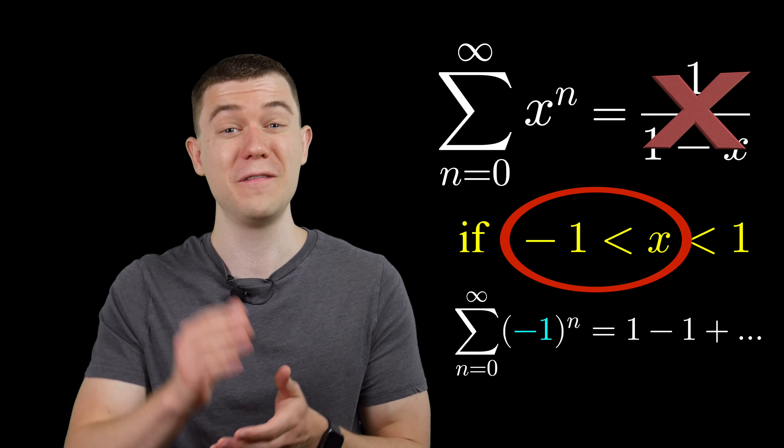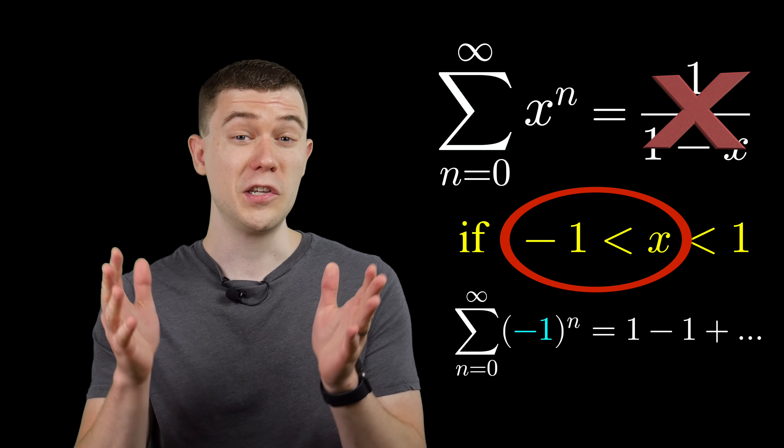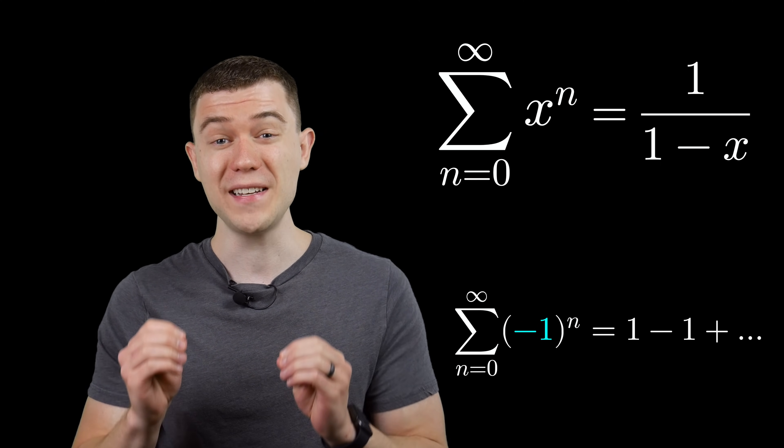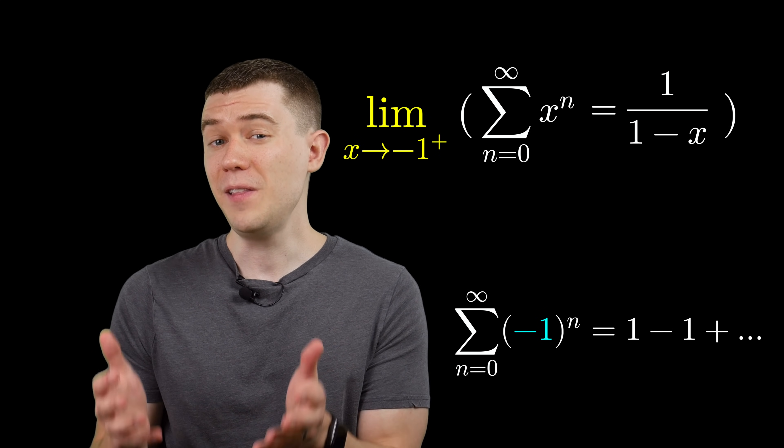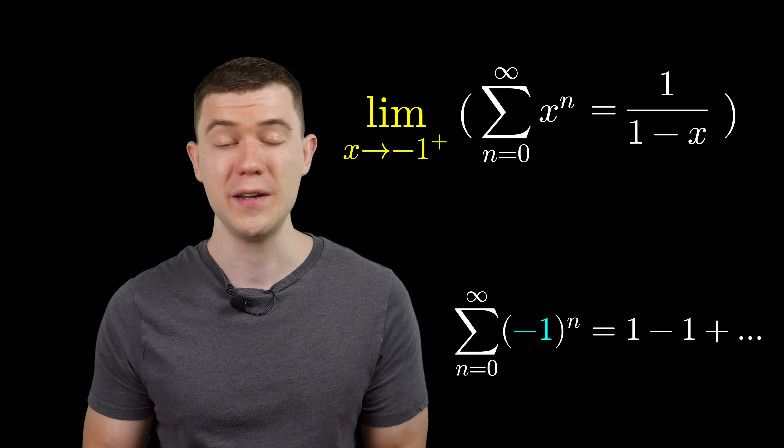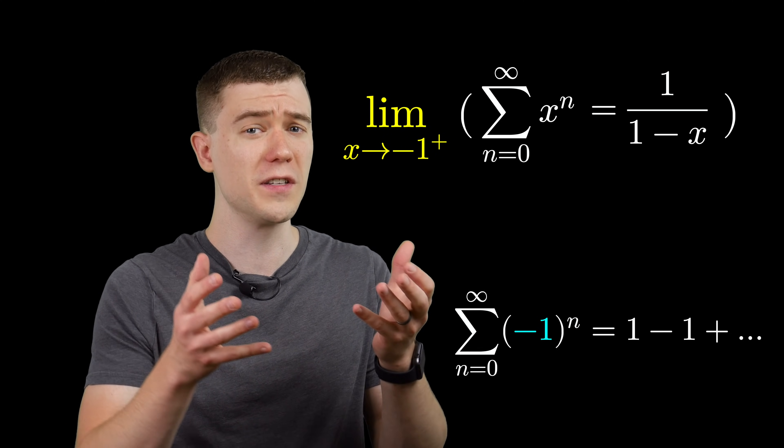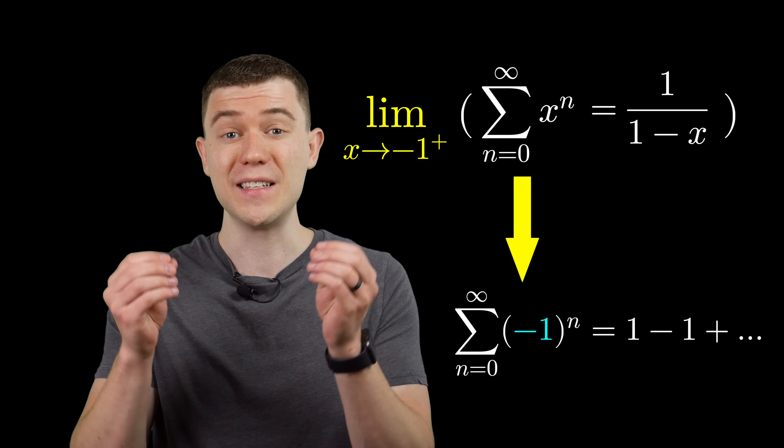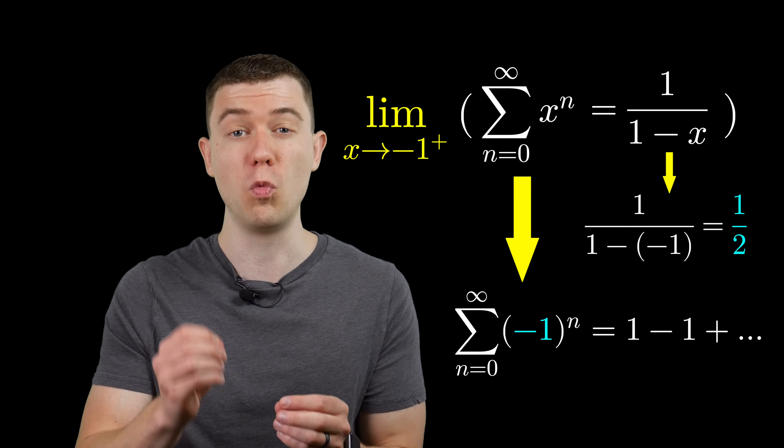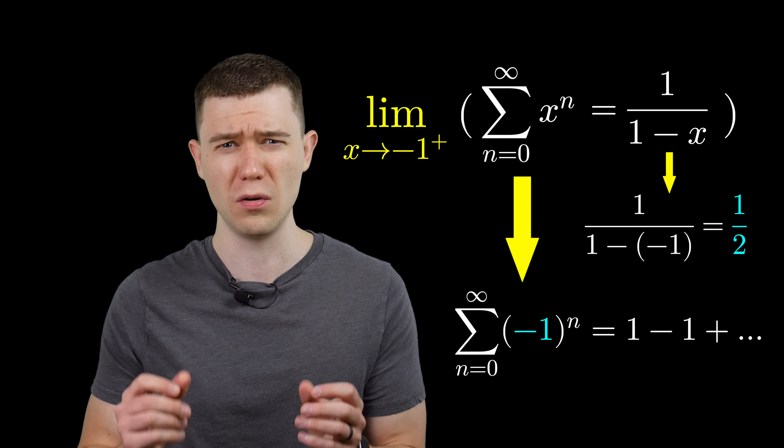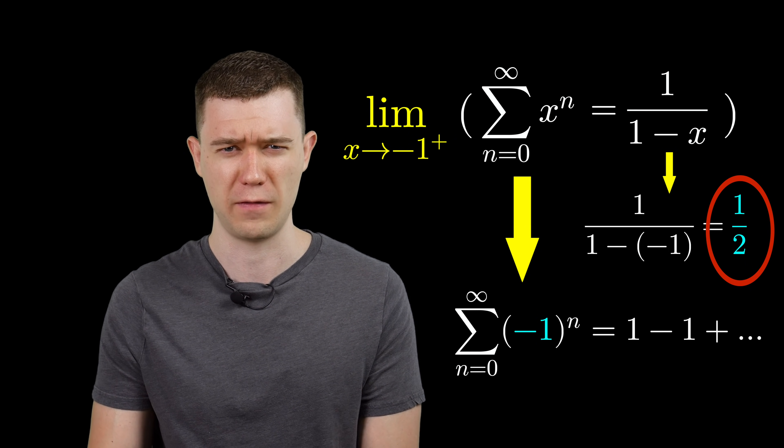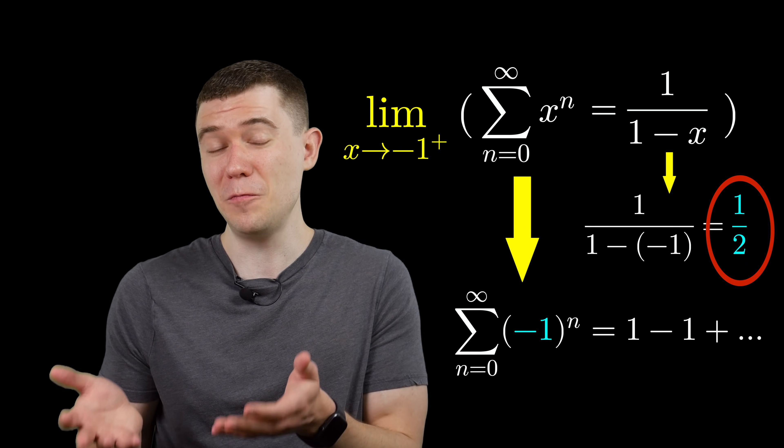Well, it's really right on the tip of the interval of convergence. So if we can't evaluate right at x equals negative one, what if we approached it? What if we did limits? If we let x approach negative one, then the geometric series approaches the Grandi series, and its sum approaches one over one minus minus one, or one half. That's pretty interesting, but we know limits as x approaches a can be different than the function evaluated at a.